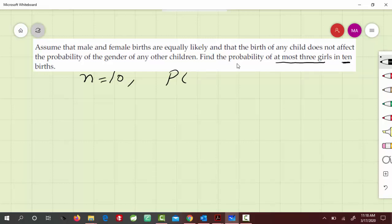Let x be the number of successes, and here the number of successes means the number of girls born. We have to find the probability at most three, so x is less than or equal to 3.